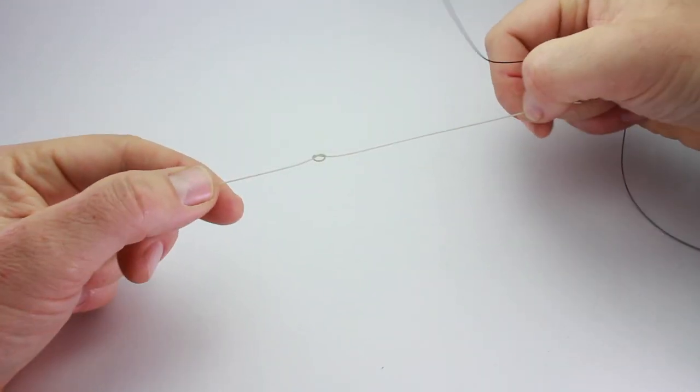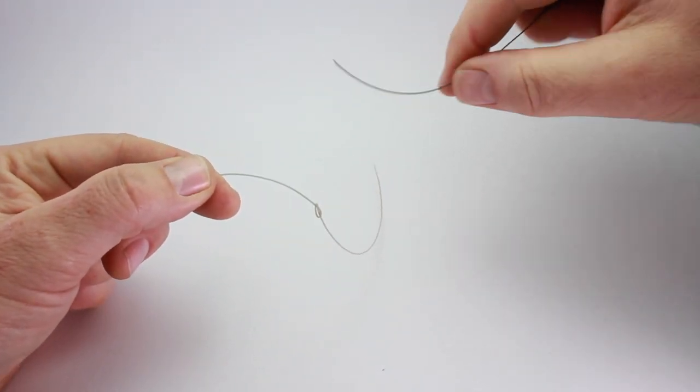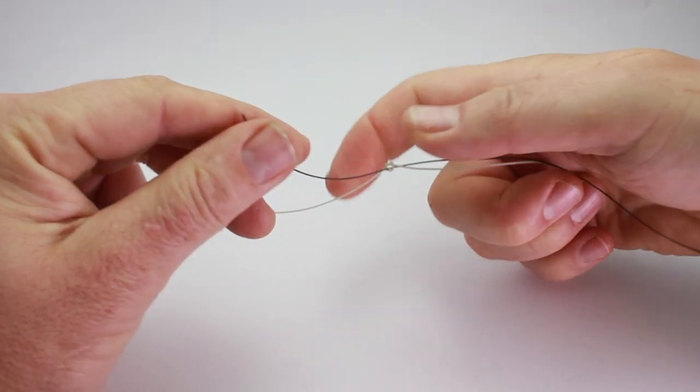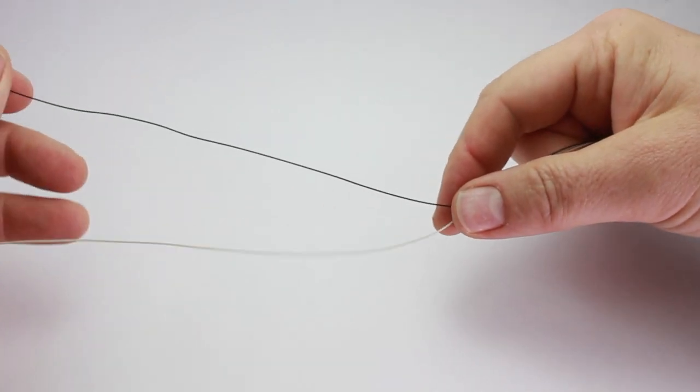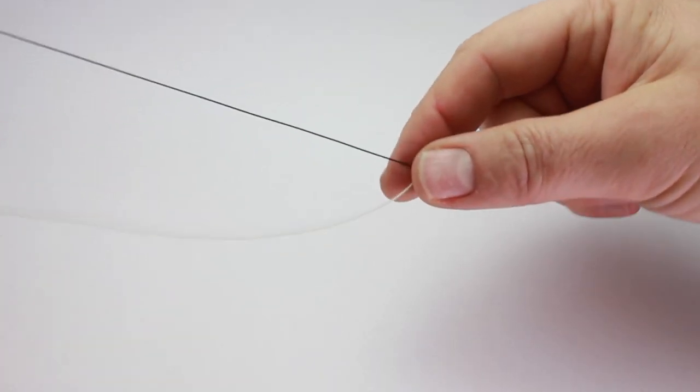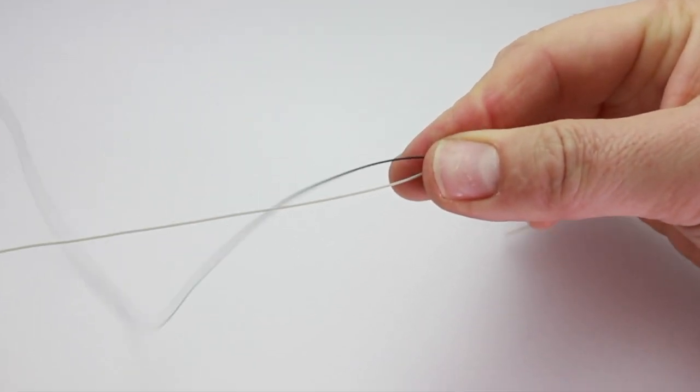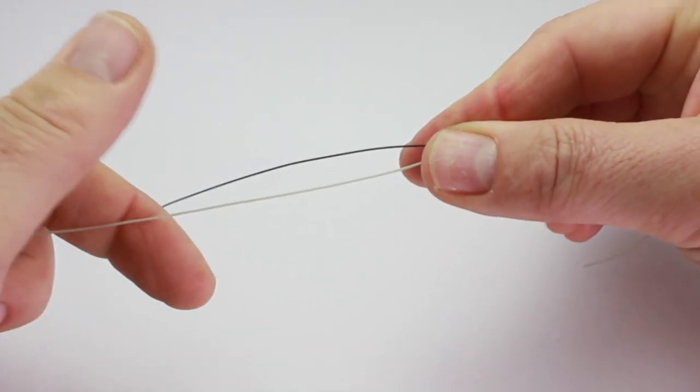You want to leave a little loop in there because you're going to come through with the main line working right to left, and then pull that through. You're going to need about 10 inches or so there. With your forefinger and thumb, keep that nice and tight.